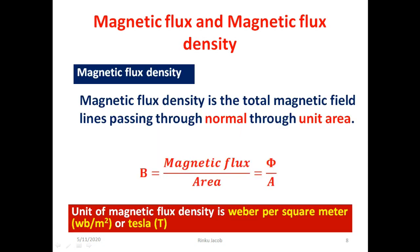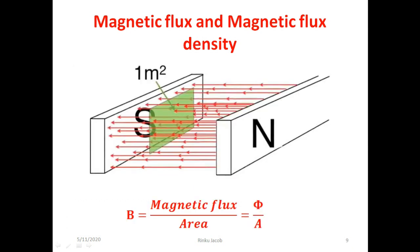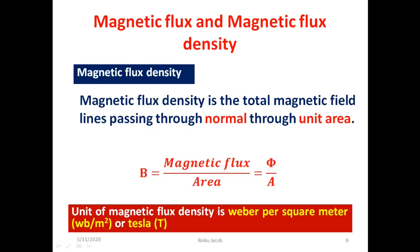Now we see the definition for magnetic flux density. Here we measure the total magnetic field lines passing normal through an area, but the area taken here is unity. So the magnetic flux density, denoted by B, is equal to the magnetic flux divided by the total area through which it is passing. This gives the amount of magnetic field lines that pass through a unit area. The unit of magnetic flux density is Weber per meter square, otherwise called Tesla.